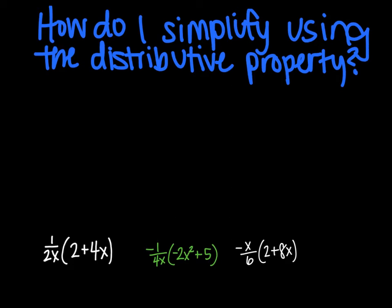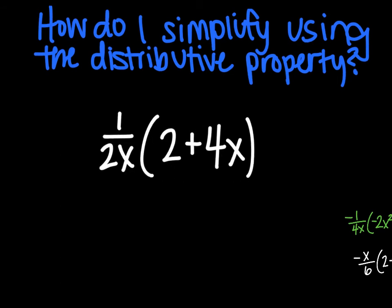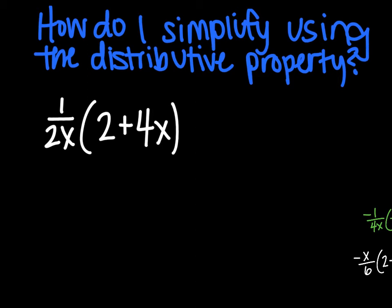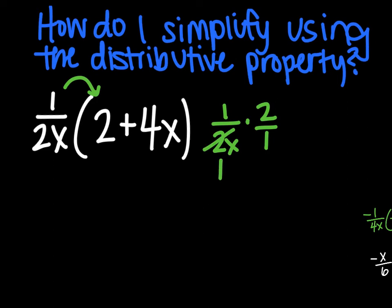Now we're going to get harder problems. How do I simplify using the distributive property? Still dealing with fractions, but these are much more complex. It's really important to show your work, and neatness helps too. So: 1 over 2x, multiplying — distributing — into (2 + 4x). Feed the birds: 1 over 2x times 2 over 1. Simplify before you multiply — divide out 2 — and you get 1 over x. Transfer that answer over: 1/x.